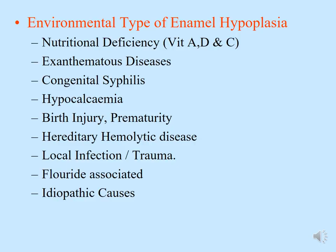The environmental type of enamel hypoplasia is associated with various causes: nutritional deficiencies of vitamins D, A, and C; exanthematous diseases that produce skin eruptions and fever in children; congenital syphilis; hypocalcemia; birth injury; prematurity; hereditary hemolytic disease; local infection or trauma; fluoride; or idiopathic causes. All of these categorize the environmental type of enamel hypoplasia.